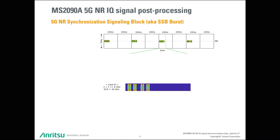The illustration of SSB transmissions shown above is the case where all SSBs are transmitted. But it is not required to transmit all SSBs at all times. Depending on network requirements, the network can selectively transmit only a few SSBs and inform the user equipment of which SSBs are transmitted and which are not transmitted.